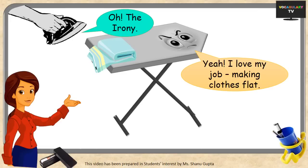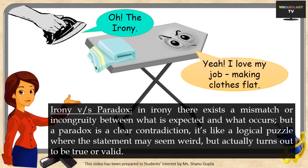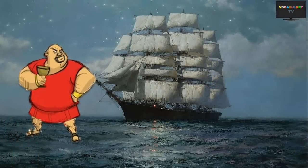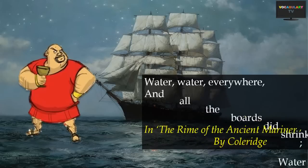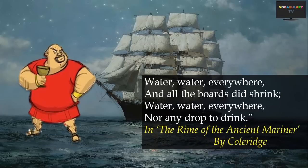The key difference between paradox and irony: in irony, there exists a mismatch or incongruity between what is expected and what occurs; but a paradox is a clear contradiction — a logical puzzle where the statement seems weird but turns out to be true or valid. Irony also appears in poetry; for example, Coleridge's Rhyme of the Ancient Mariner: 'Water, water everywhere, and all the boards did shrink; water, water everywhere, nor any drop to drink.' Ironically, the ship is stranded at sea with water everywhere, but not a single drop is drinkable, as sea water is unpotable.